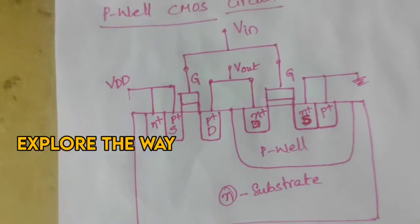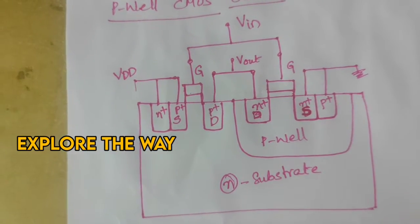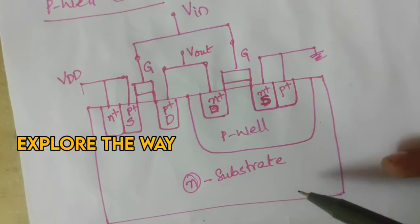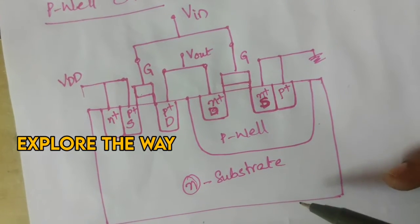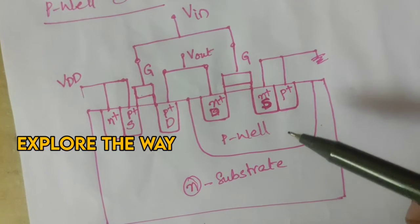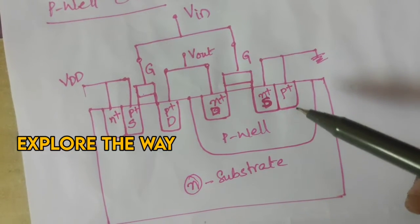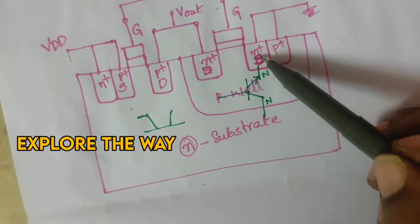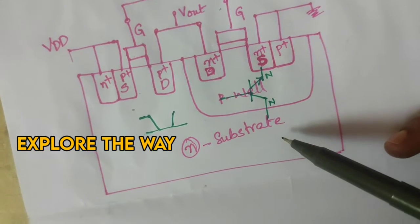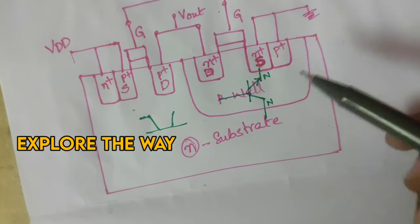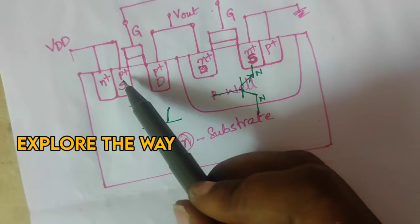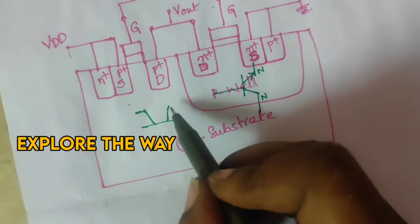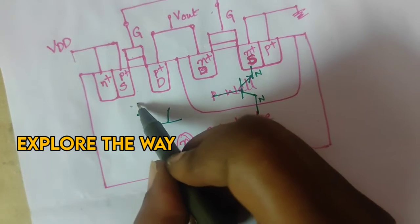This is the complete structure of the P-well CMOS circuit. In this CMOS circuit there is a stack of layers, and due to that stack, a number of P-N junctions are formed. In this CMOS structure, the N-plus source, P-well, and N-type substrate form one N-P-N transistor. And the P-plus source, N-substrate, and P-well form one P-N-P transistor.